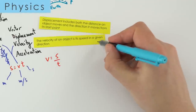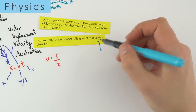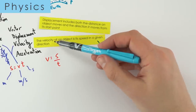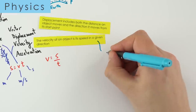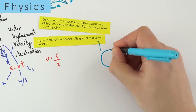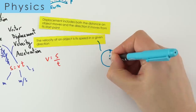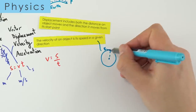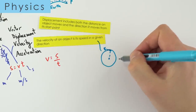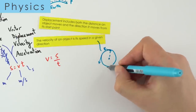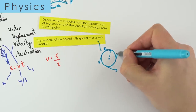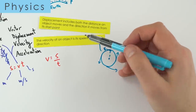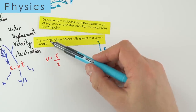An interesting case for physics: something's velocity can be changing while its speed stays constant. This happens when an object moves in a circle. It might travel at a constant 5 metres per second, but its direction is constantly changing — sometimes going left, sometimes down, right, or up. So circular motion is a special case with constant speed but changing velocity.